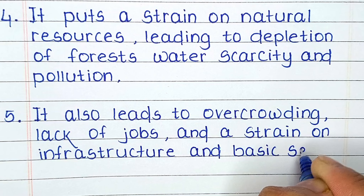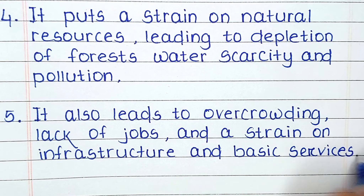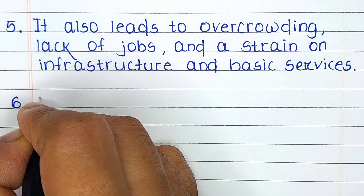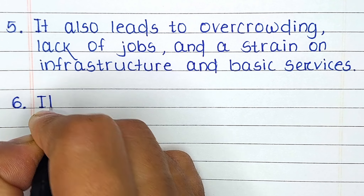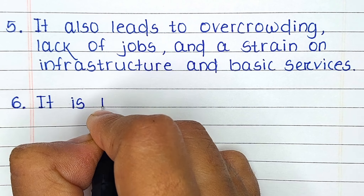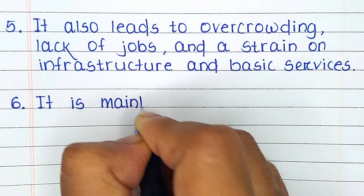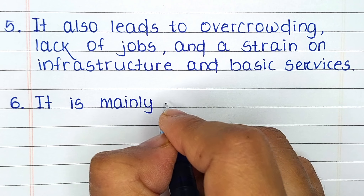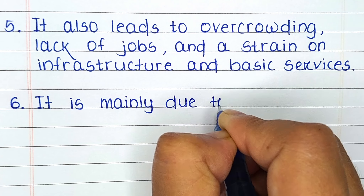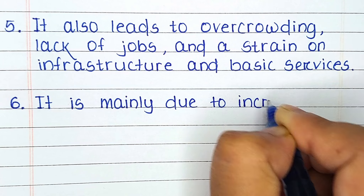Fifth line: It also leads to overcrowding, lack of jobs, and a strain on infrastructure and basic services.